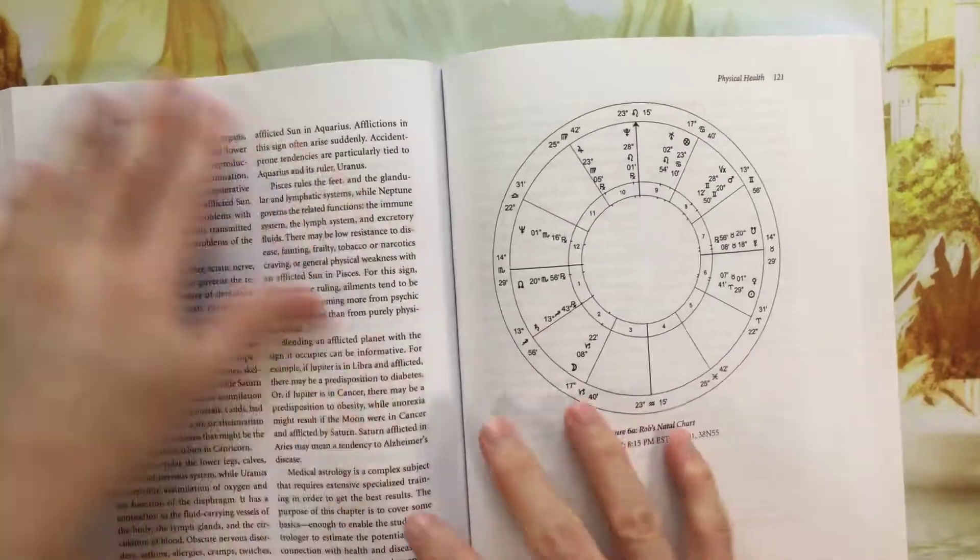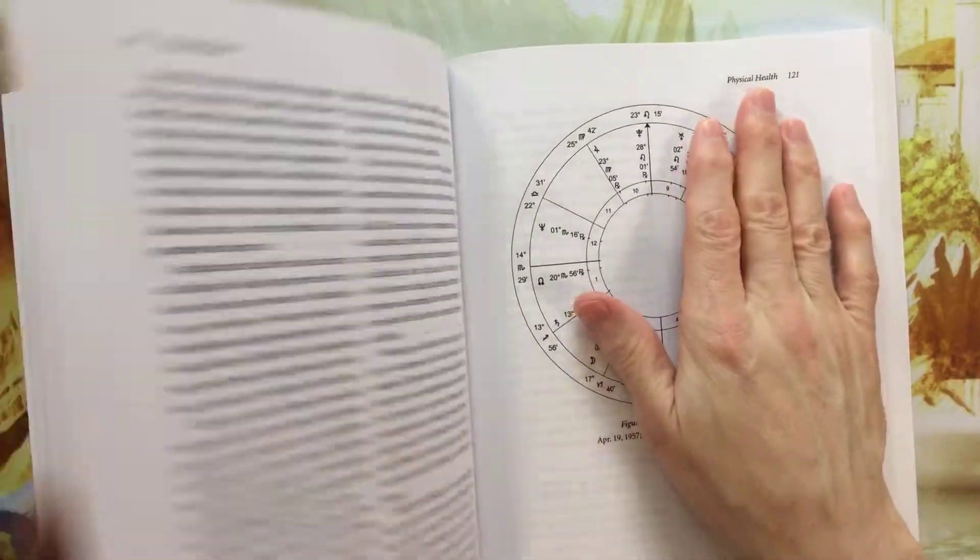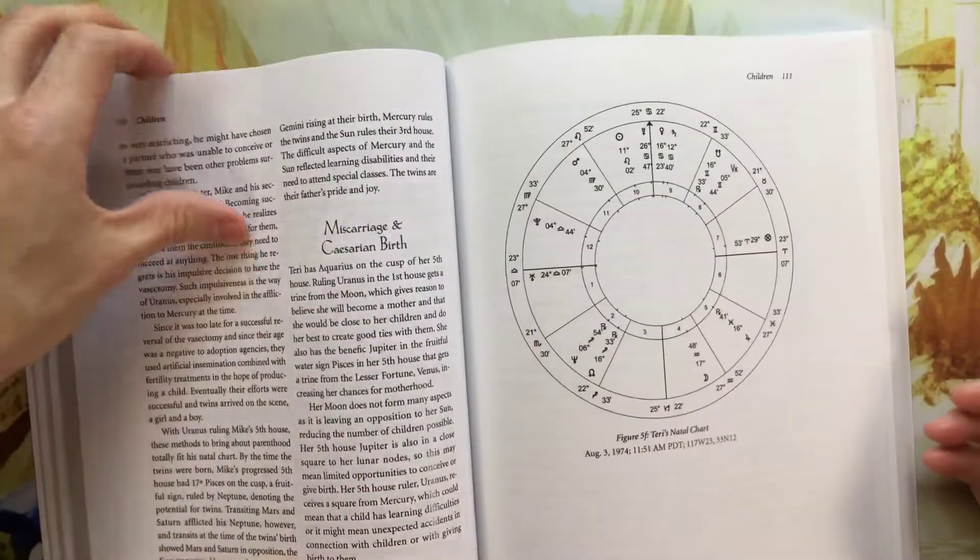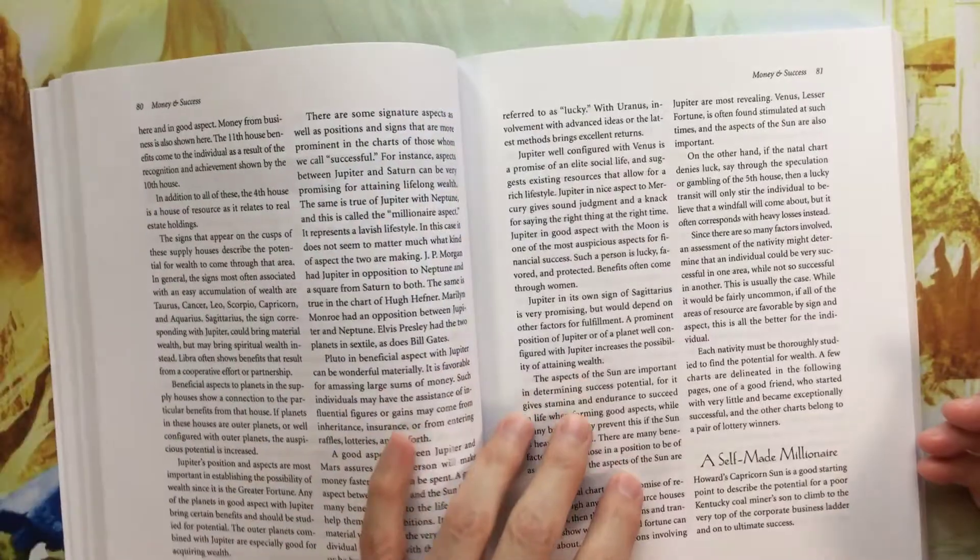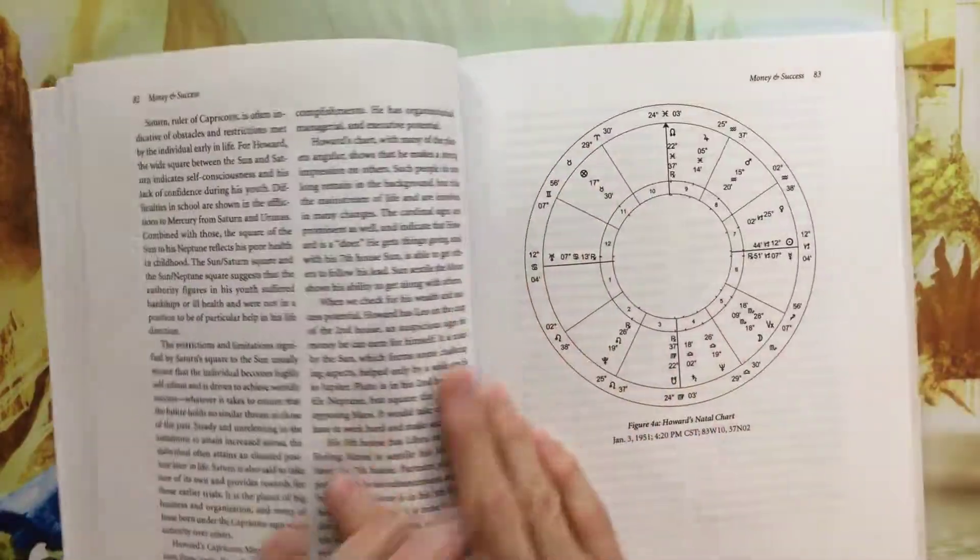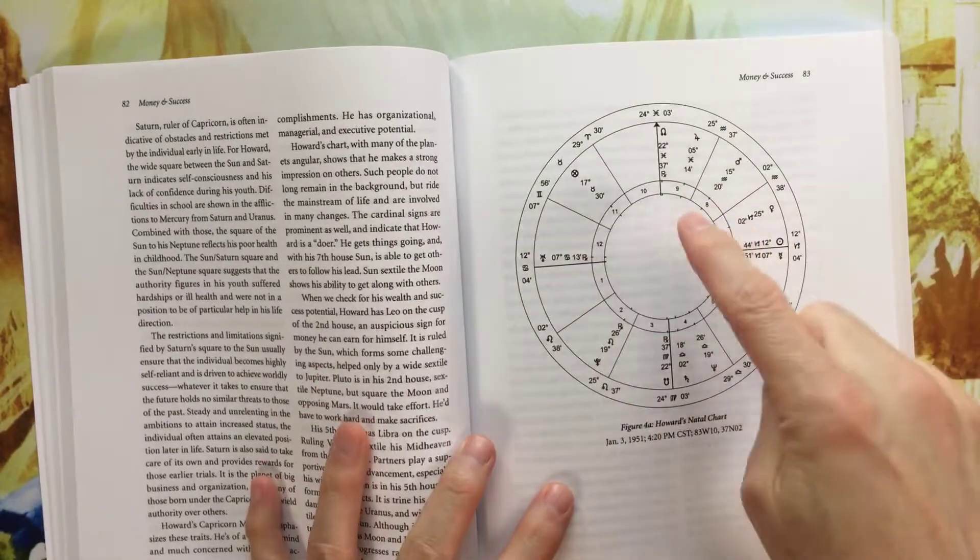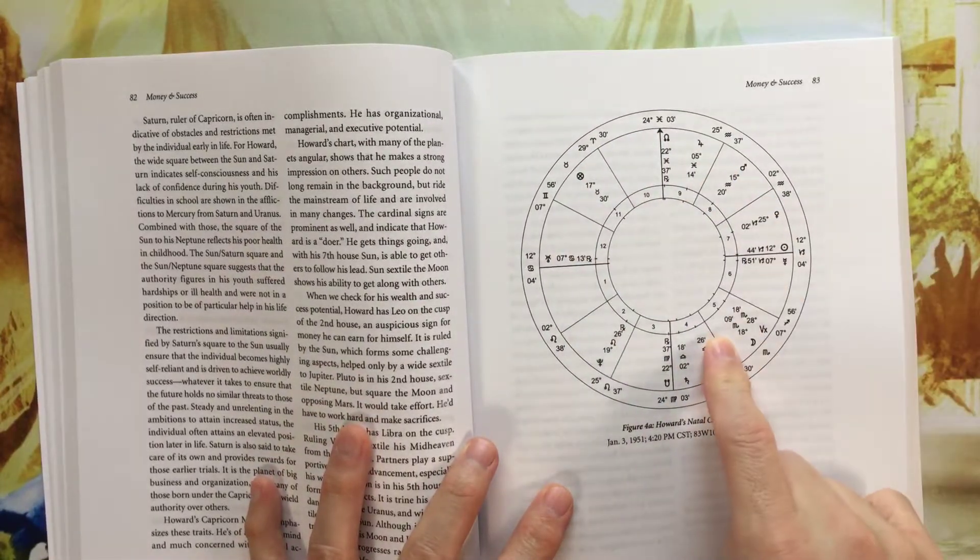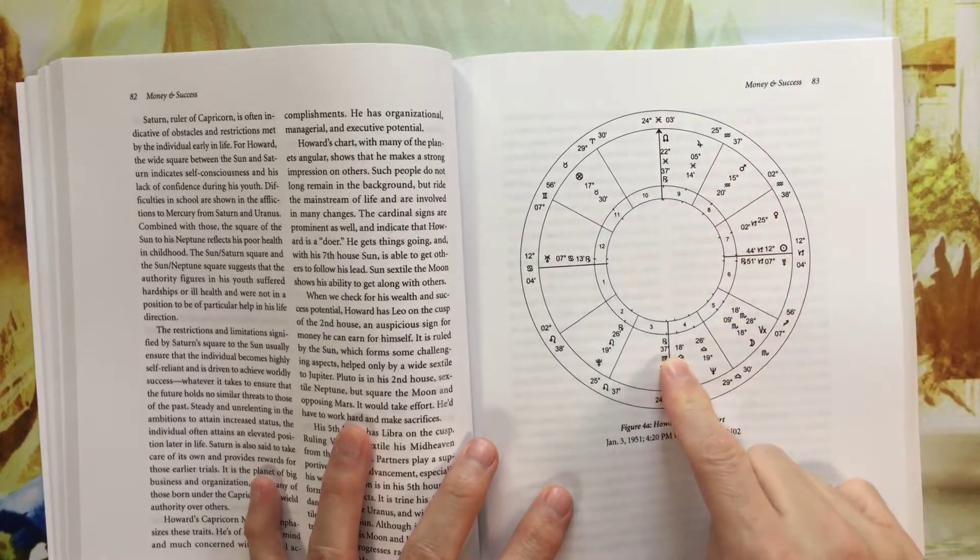Because, again, you have your meat and potatoes questions like health, lovers, children, family, money. So there's a lot in these sections that sort of show how to narrow down into the space of money, how to narrow down into success.